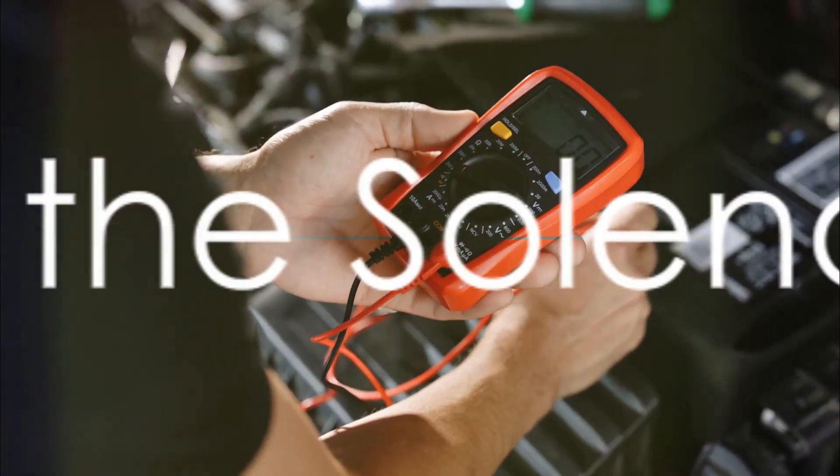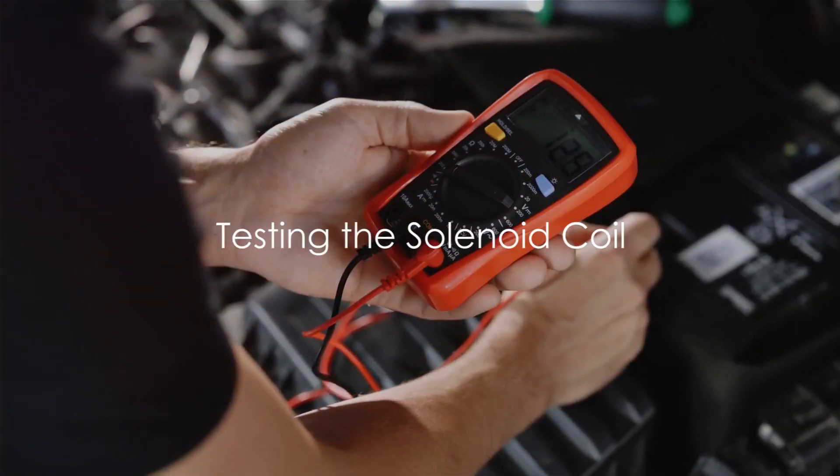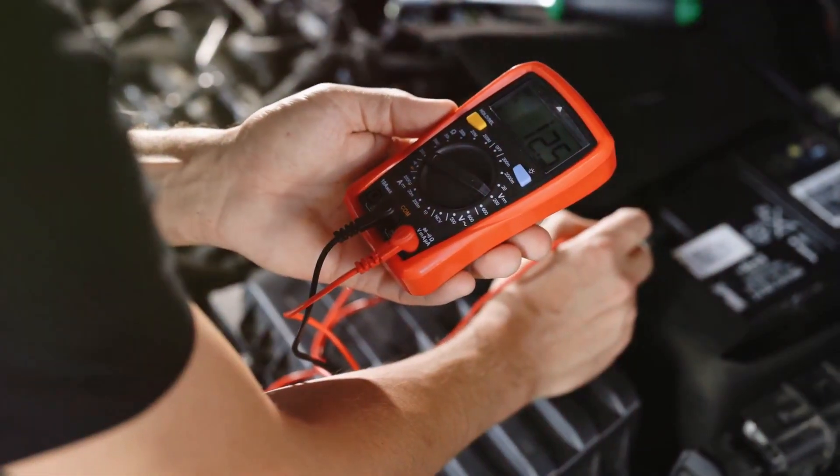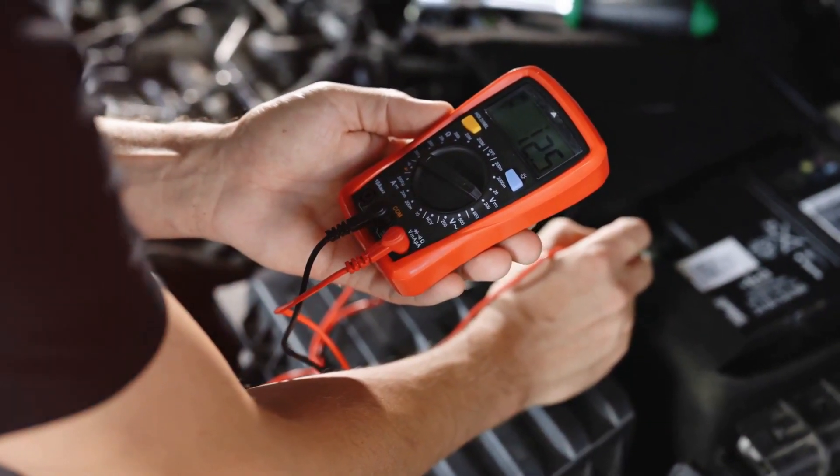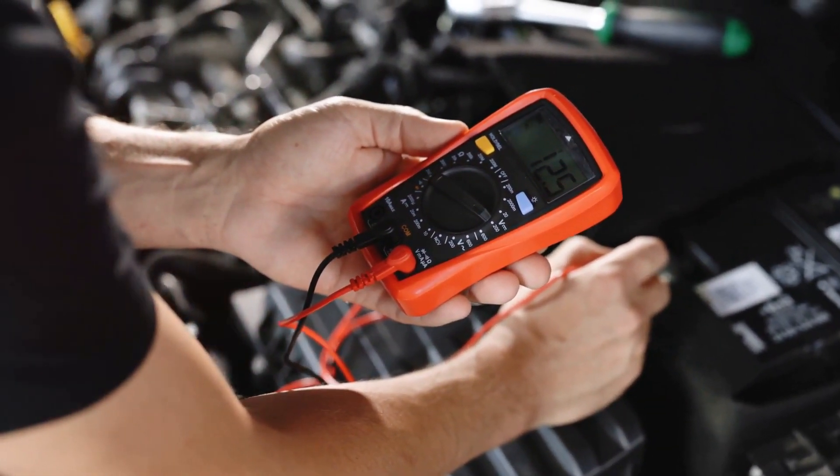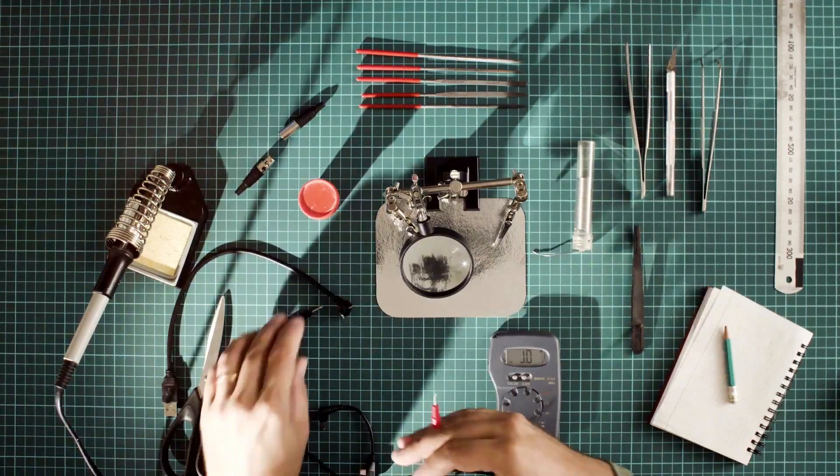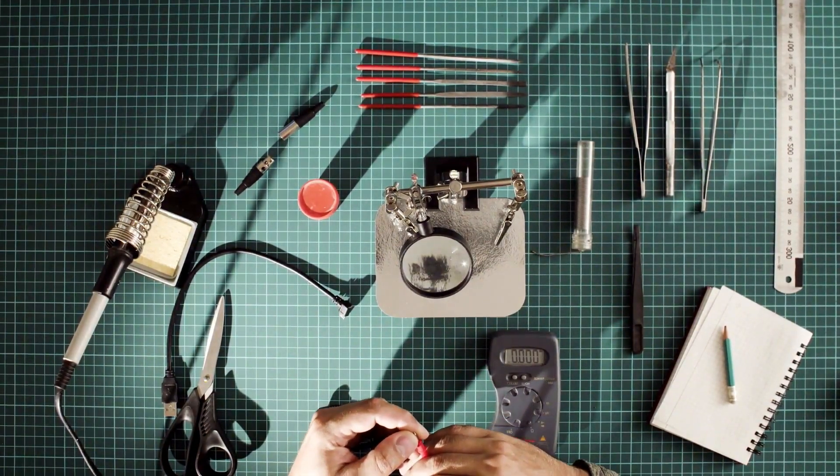With the multimeter set up, it's time to test the solenoid coil. We'll be measuring its resistance. Take the multimeter probes in hand, one colored red, the other black. Now gently touch these probes to the two terminals of the solenoid coil.